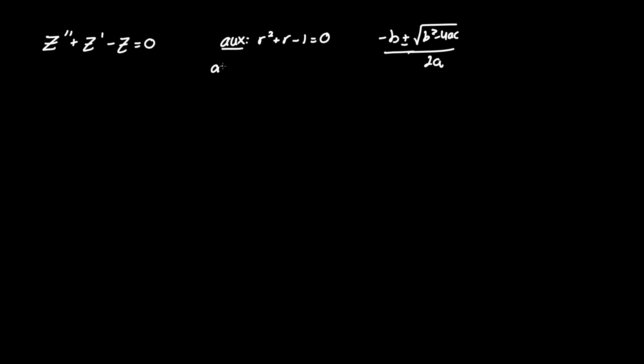So we know that a is the coefficient of r squared which is one, b is the coefficient of r which is one, and c is the constant which is negative one.